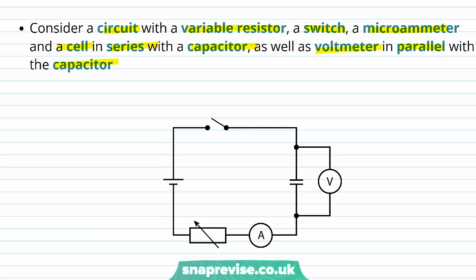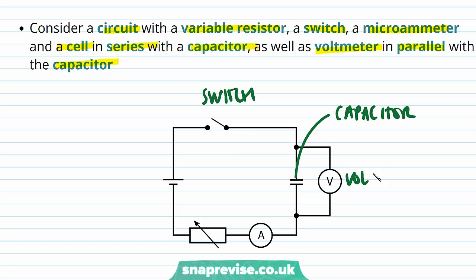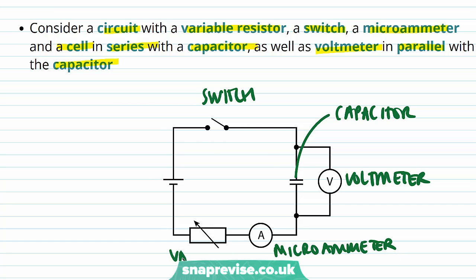Here are all the circuit symbols for a switch, a capacitor, a voltmeter, a microammeter — which can measure very small variations in current — a variable resistor, which means we can change the resistance of it, and a cell supplying an EMF.